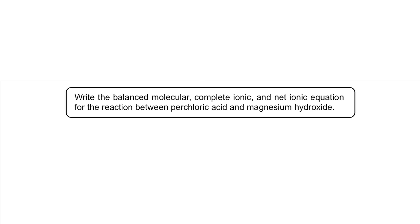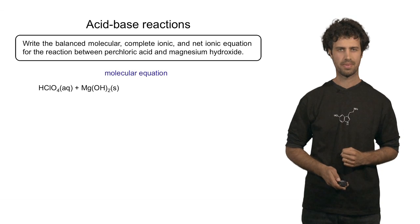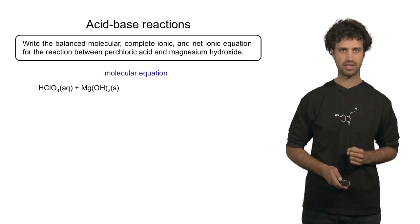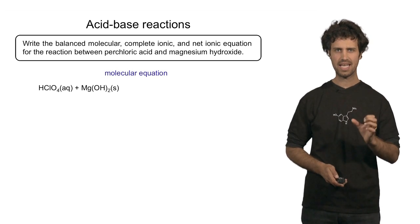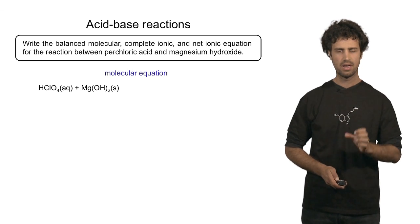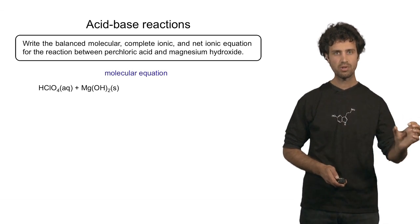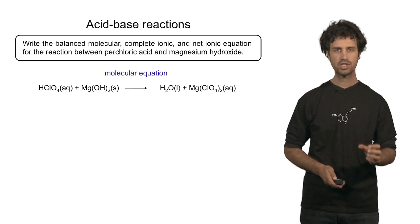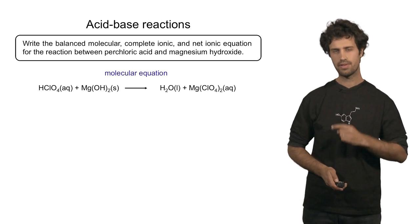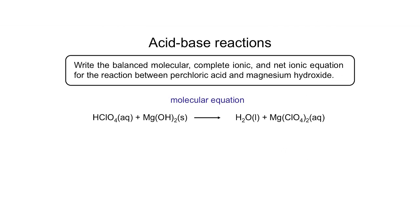Let us finish this segment by looking at the interaction of perchloric acid with magnesium hydroxide. We are asked to write down the molecular equation, the complete ionic equation, and the net ionic equation. Starting with the molecular equation: on the reactant side we find perchloric acid and magnesium hydroxide. Note that magnesium hydroxide is an insoluble salt, so it is a solid. The hydroxide component interacts with a proton from perchloric acid to form water, and we also form magnesium perchlorate. This equation is not yet balanced, because there are two hydroxide units on the reactant side and only one proton from perchloric acid. So we need two perchloric acid units to form two water molecules. Now the reaction is balanced.